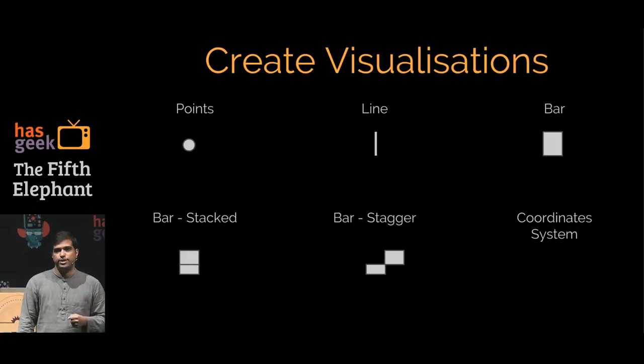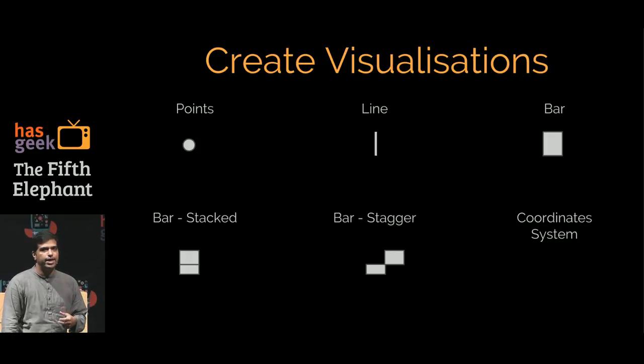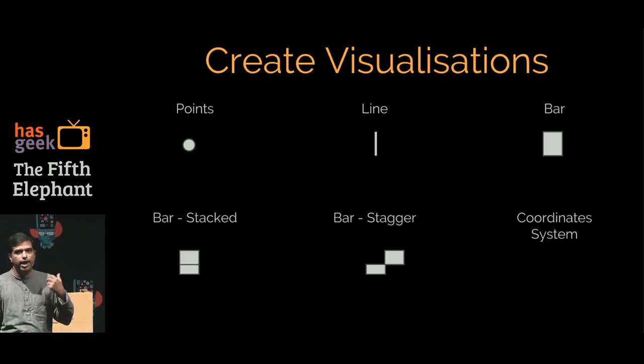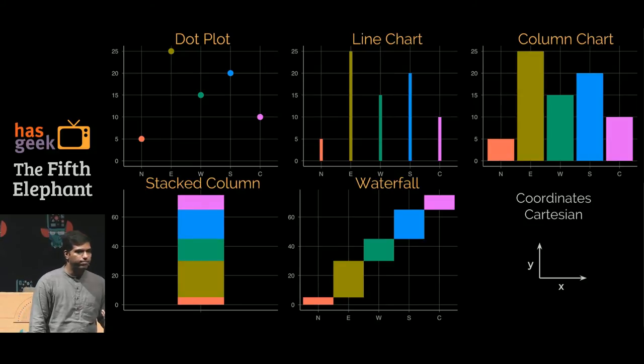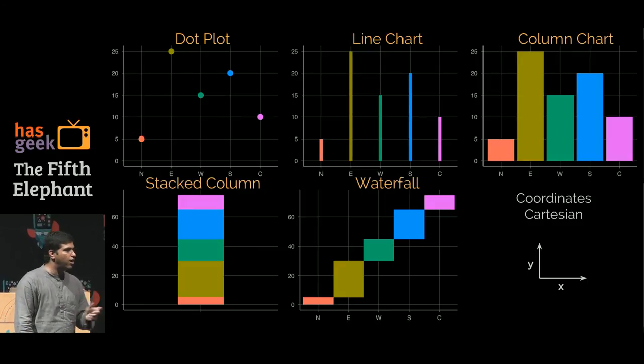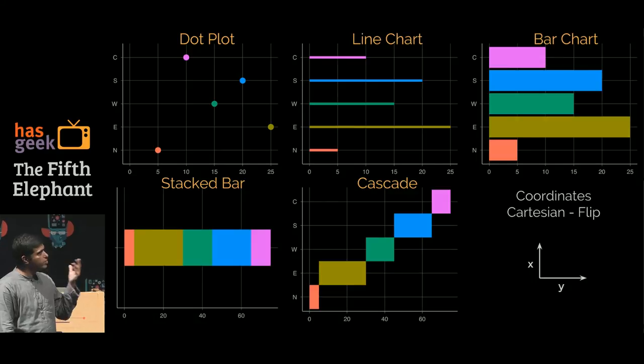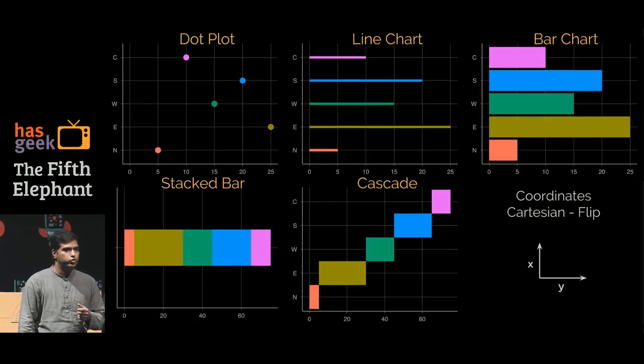We can use these simple steps to create multiple visualizations. Let's take the same data set and render it with either a point, a line, a bar, a stacked bar or a bar stagger. We're taking three different geometric shapes and two position combinations in that bar space. We can look at the power of this visualization using different coordinate systems. If the coordinate system is Cartesian, X and Y, we would get a dot plot, a line chart, a column chart, a stacked column and a waterfall. I can cheat very quickly and flip the Cartesian system so X is Y and Y is X, and I would have dot, line, bar, stacked bar and a cascade. So I've already got ten visualizations that I can do.